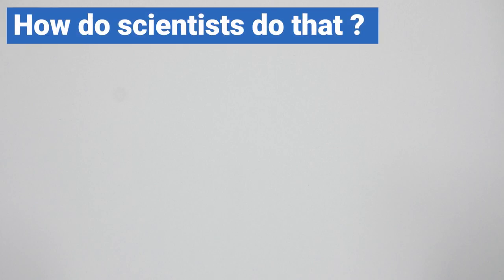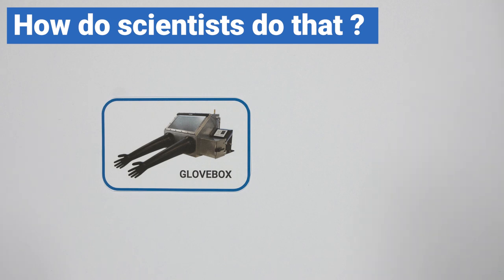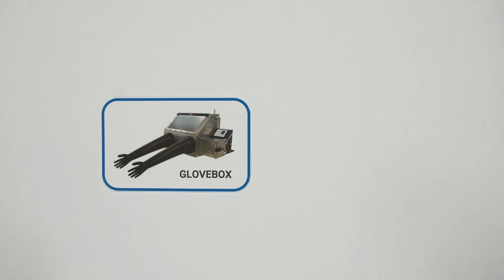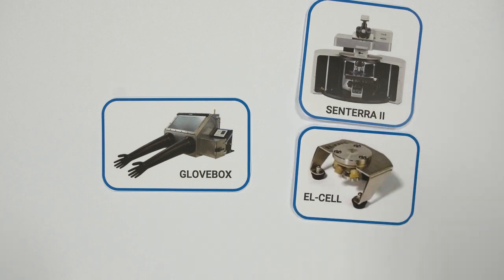But how do scientists do that? The setup is quite simple actually. Of course, you need a lab and, for example, a glove box to handle the very sensitive materials that are used in modern lithium-ion battery. But besides that, you basically only need a good Raman microscope and an electrochemical cell like this one right here.